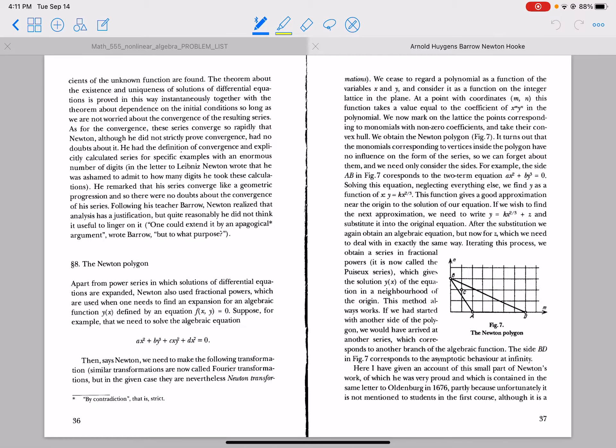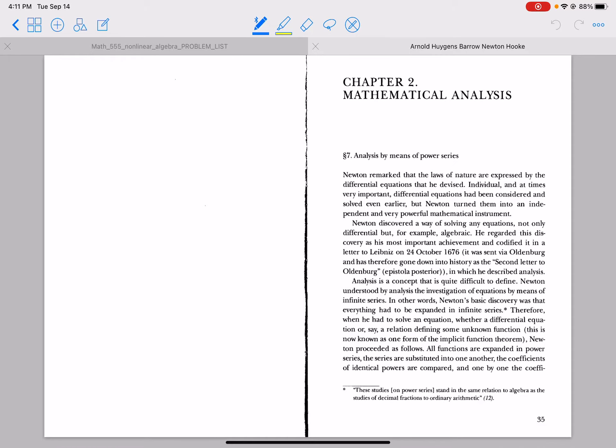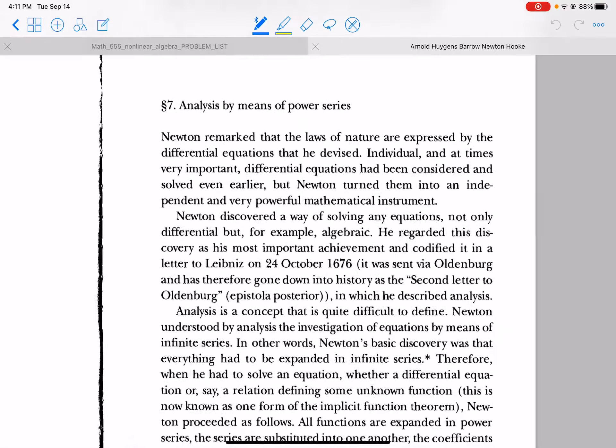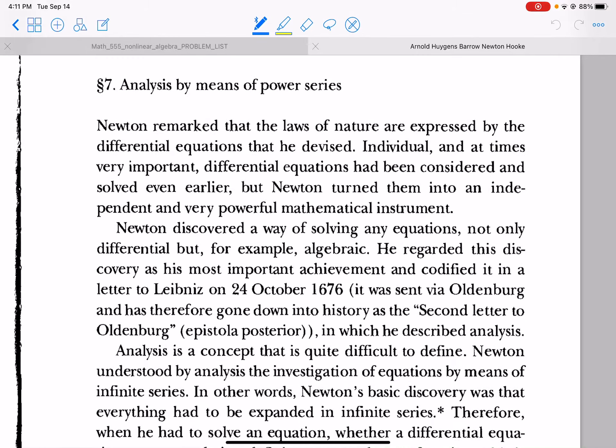And when you have multiple equations, multiple polynomials, like if you had two polynomials, then you take something called the mixed volume of this polytope and the similar polytope for the other polynomial. We're going to talk about that later. Yeah, so like the area of this triangle has something to do with solutions to equations. So let's go look at this book, this is called Huygens, Barrow, Newton, and Hooke.